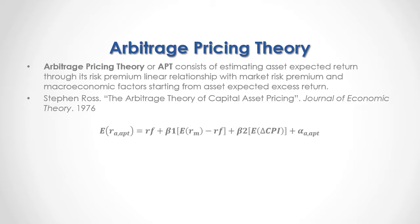As a formula, the expected asset return through the APT model equals the risk-free rate of return, plus a beta 1 coefficient multiplied by the market risk premium — the expected market return minus the risk-free rate — plus a beta 2 coefficient multiplied by a macroeconomic factor. In this educational example, that factor is the expected change in CPI, the consumer price index, which represents inflation when positive or deflation when negative, plus the expected asset excess return from the APT model.